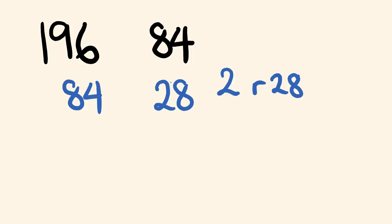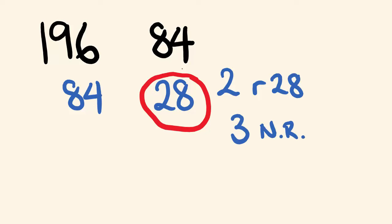So we repeat this step. How many times does 28 go into 84? It goes in three times, and there is no remainder — it goes in perfectly. Once there's no remainder, we stop, because now we know the greatest common factor. It's the number we divided into — the smaller of our two numbers here. So it's 28. Pretty much what we do is divide the smaller number into the larger, move any remainder and the smallest number to the next stage, and continue until we get no remainder. That number is our greatest common factor.